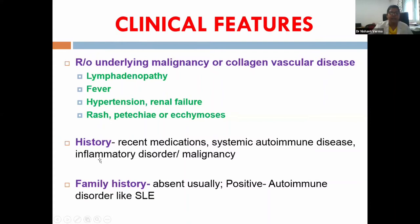While taking history, it's important to ask about recent medications because drugs like cephalosporins and piperacillin can cause warm-type autoimmune hemolytic anemia. History of systemic autoimmune diseases, inflammatory disorders, and malignancies should also be sought. Family history is usually absent but may be positive in SLE.